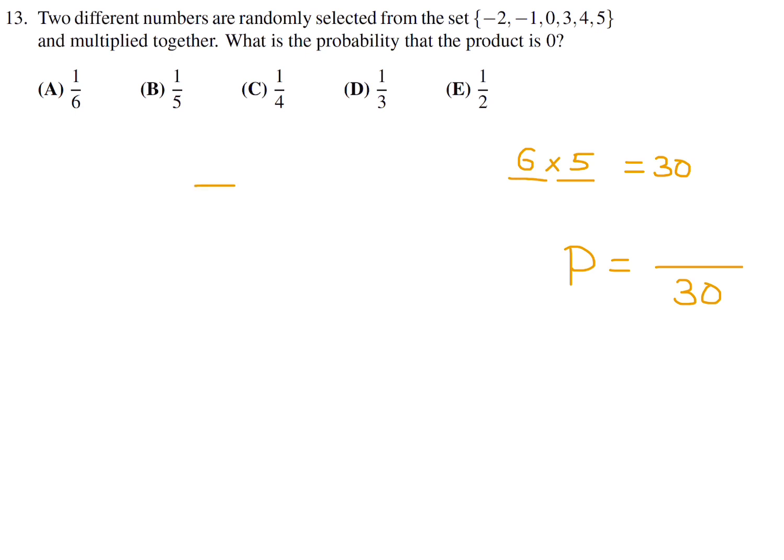We want the product to be 0. How do we get a product of 0? If the first number is 0, then anything that goes here, if you take a product, will be 0. If the first number is 0, there's only one way of doing that, and then the remaining I've got 5 choices, so that's 5. Similarly, if the second number is 0 and the first number was any of the other 5 numbers, that's 5. So to make a 0 product from 2 numbers, there's 10 ways of doing that. Therefore, the probability in lowest terms would be 1 over 3. Number 13, the answer is D.